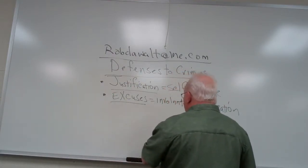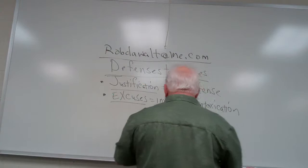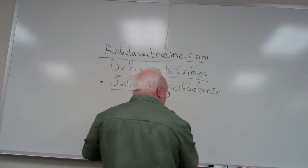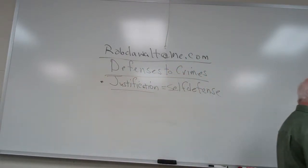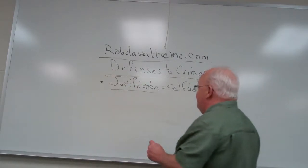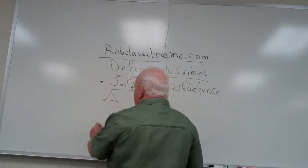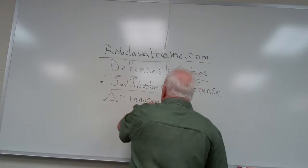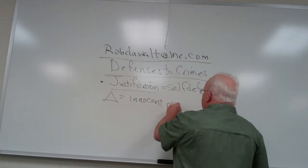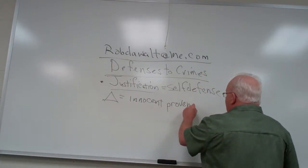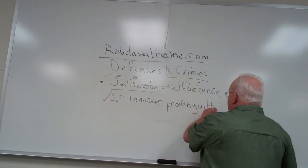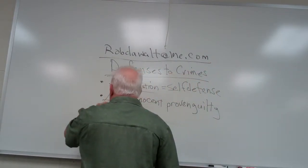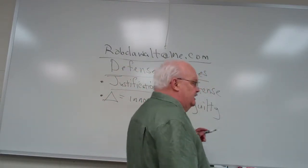We'll go into more defenses later, but let's touch a little more on the justification side and look at some other complete defenses. One thing to keep in mind about any defenses is that the defendant is innocent until proven guilty. Even though the guy's been arrested, held in jail, had to post bond — he is still innocent until proven guilty.